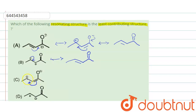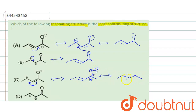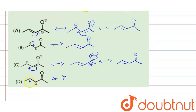Coming to the third resonating structure, the pi bond shifts from this carbon to the adjacent carbon since a carbocation is present there. A new carbocation is generated at the original carbon, so oxygen donates its electrons and we get the stable molecule.